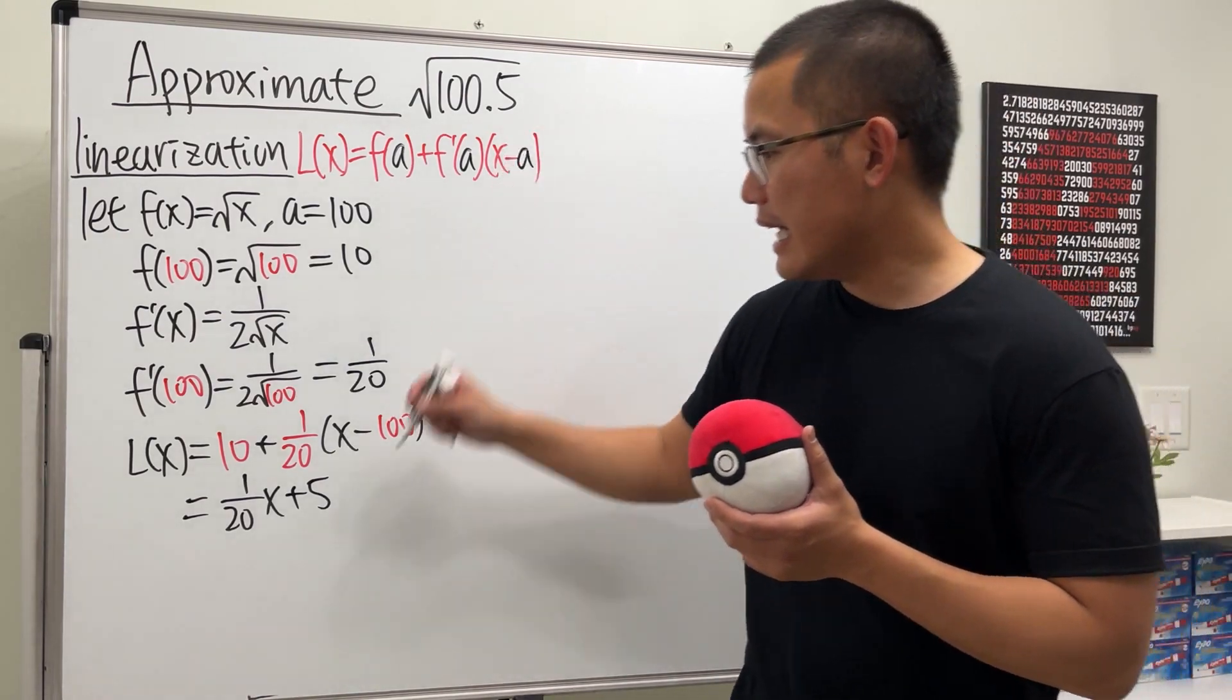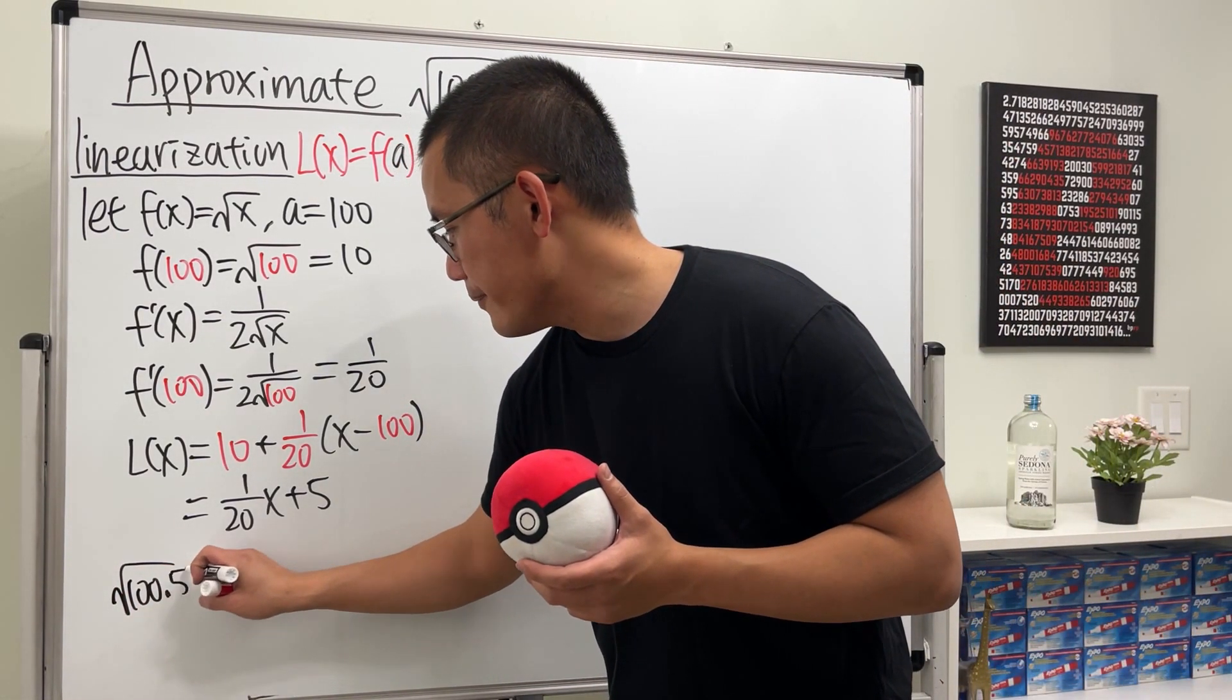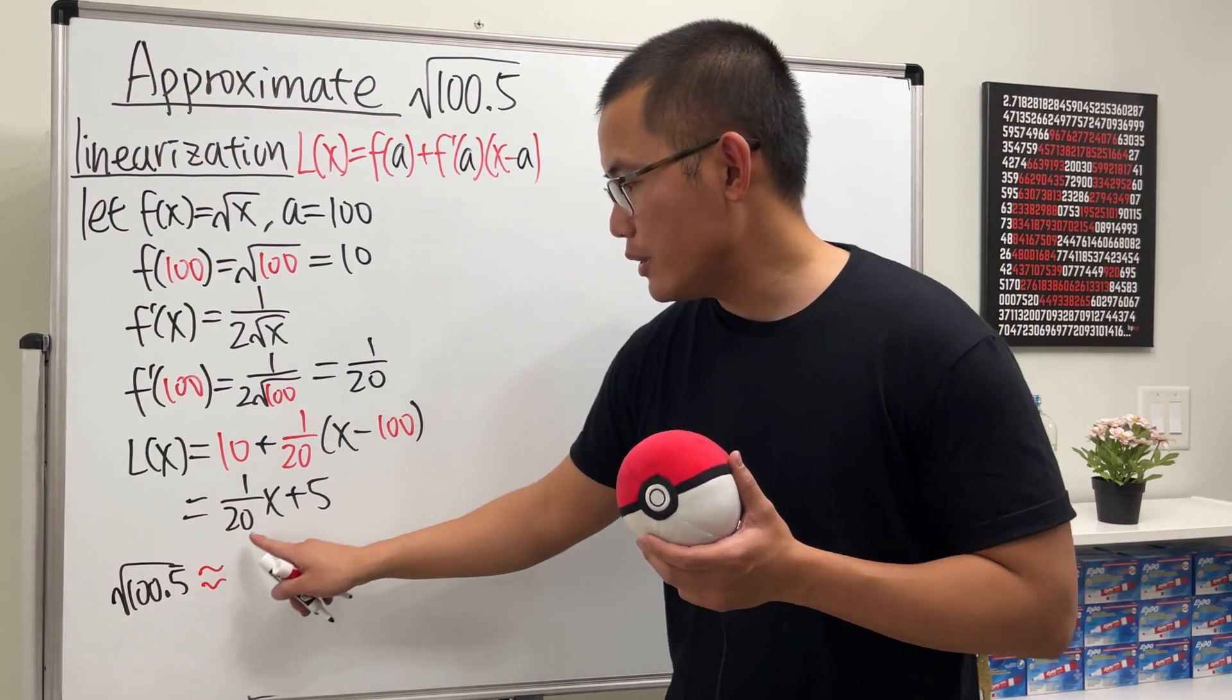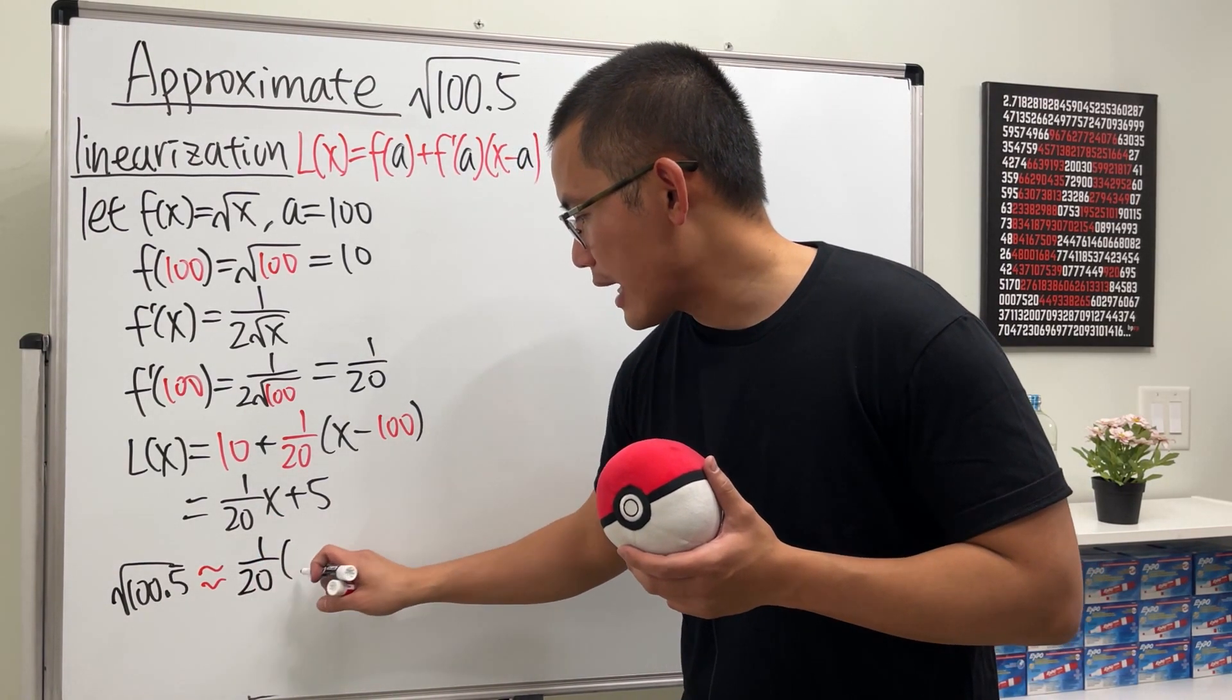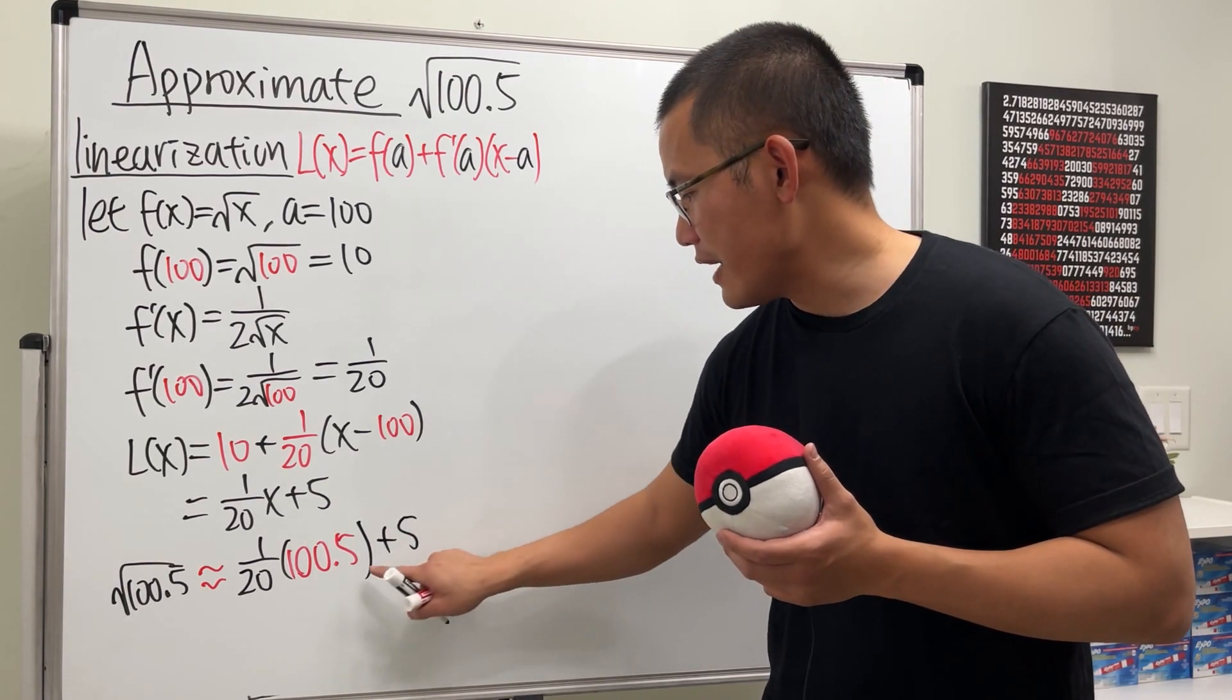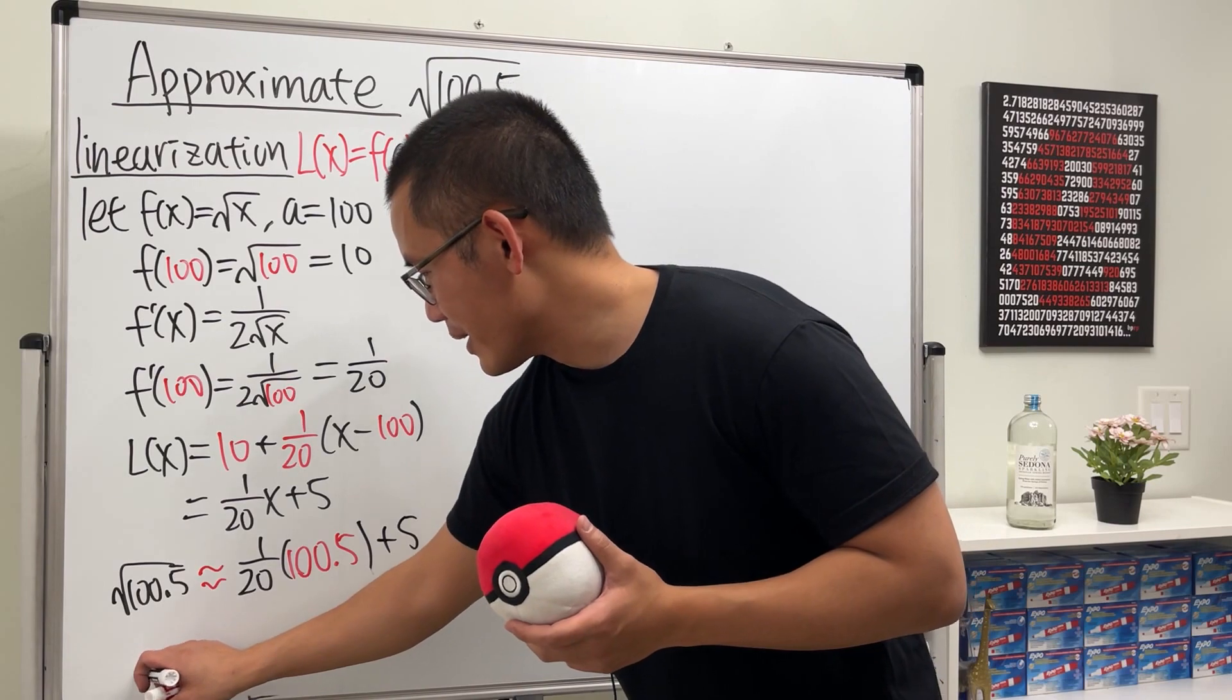And then we can just say that square root of 100.5, this right here is going to be approximately, we're plugging 100.5 into this now. So we have 1 over 20 times 100.5, and then plus 5. Worked it out,